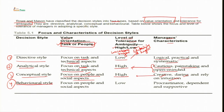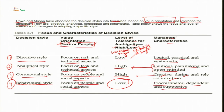The last style given by Rowe and Massen is the behavioral style. This style has a focus on people and social aspects, but the tolerance for ambiguity is low. The manager's characteristics include being a procrastinator, dependent and supportive. Such managers try to delay all required decision making as much as possible during the course of time.